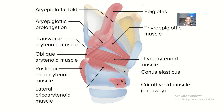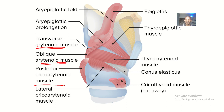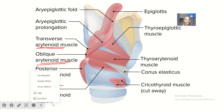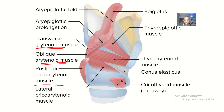You can see these are the intrinsic muscles of the larynx. The muscles we are looking at include: transverse arytenoid muscle, oblique arytenoid muscle, posterior cricoarytenoid muscle, lateral cricoarytenoid muscle, thyroepiglottic muscle, thyroarytenoid muscle, and cricothyroid muscle.